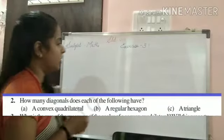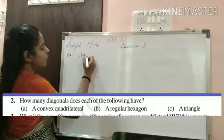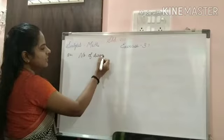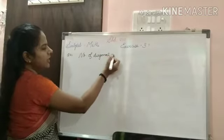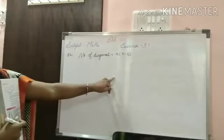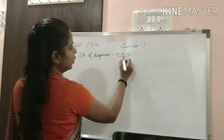So, what here is the formula we are going to use is question number 2, number of diagonals is equal to n into n minus 3. This is the formula, n into n minus 3 by 2.